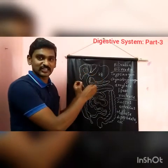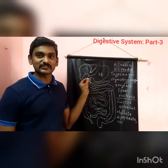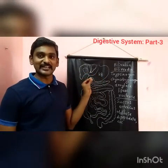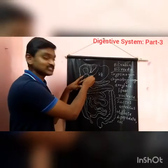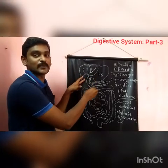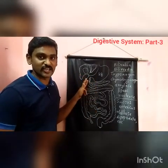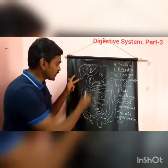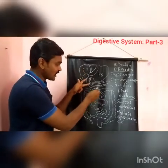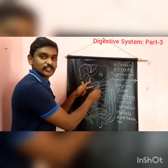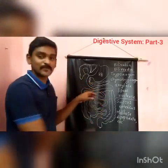The small intestine consists of three regions. The first region is C-shaped and it is called the duodenum. The duodenum region is followed by the jejunum.